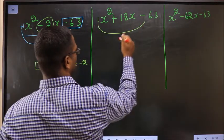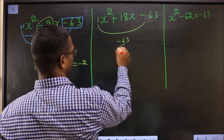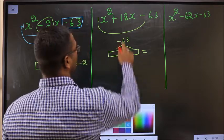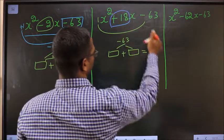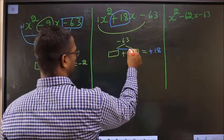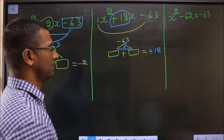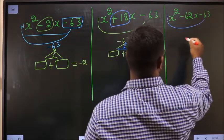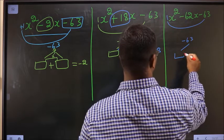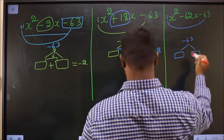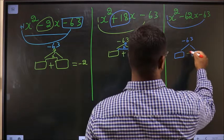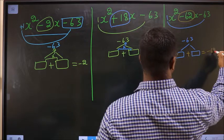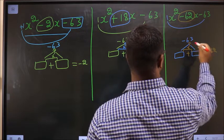For the second expression: 1 times minus 63 is minus 63. Look out for two numbers such that when I add them I should get plus 18, and when I multiply them I should get minus 63. For the third expression: 1 times minus 63 is minus 63. I should look out for two numbers such that when I add them I should get minus 62, and when I multiply them I should get minus 63.